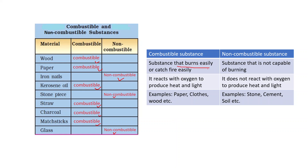Substances that burn easily or catch fire easily are combustible substances. Non-combustible substances are not capable of burning. Combustible substances react with oxygen to produce heat and light, while non-combustible substances do not react with oxygen to produce heat and light. Examples of combustible substances are paper, cloth, wood, etc. Examples of non-combustible substances are stone, cement, soil, etc.